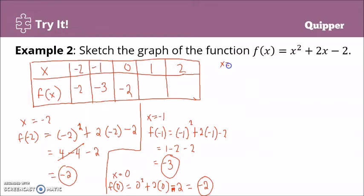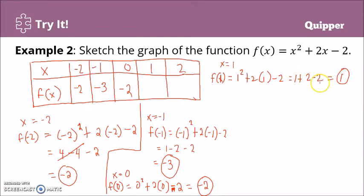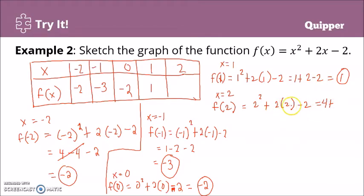When x equals 1, f(1) = 1 squared plus 2 times 1 minus 2. 1 squared is 1, 2 times 1 is 2, minus 2, and that is equal to 1. When x equals positive 2, f(2) = 2 squared plus 2 times 2 minus 2. 2 squared is 4, plus 2 times 2 is also 4, minus 2. That gives us 8 minus 2, which is 6. What we do here — the substitution and solving — we call that evaluating functions. We now have the table of values, and from this, we can sketch the graph.